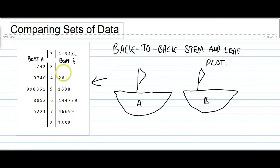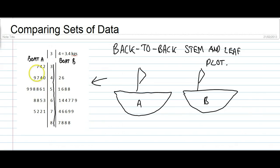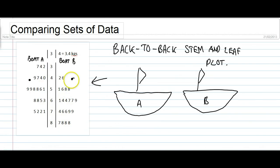In a back-to-back stem and leaf plot, both of the data sets use the same stem. Down the middle, we've got the stems, and one set of data will have its leaves on the left while the other set will have its leaves on the right. The advantage of having this back-to-back stem and leaf plot is that we can easily compare the two data sets because they're side-by-side and pictorial.